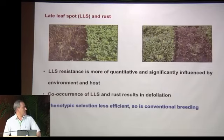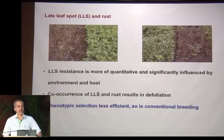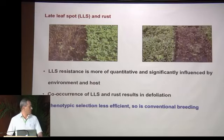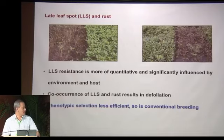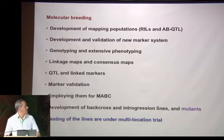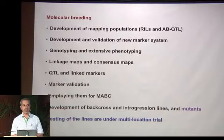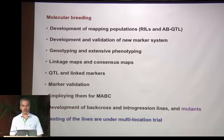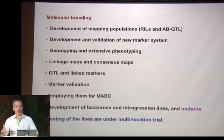Co-occurrence of LLS and rust results in defoliation, so they are almost always associated. Screening for both diseases is really challenging. When phenotypic selection is not so efficient, conventional breeding becomes less efficient, so we think of molecular breeding. I considered two phases: the first is development of genomic resources like markers, identifying QTLs, and validation of these markers, which is very important before they are taken for molecular breeding.